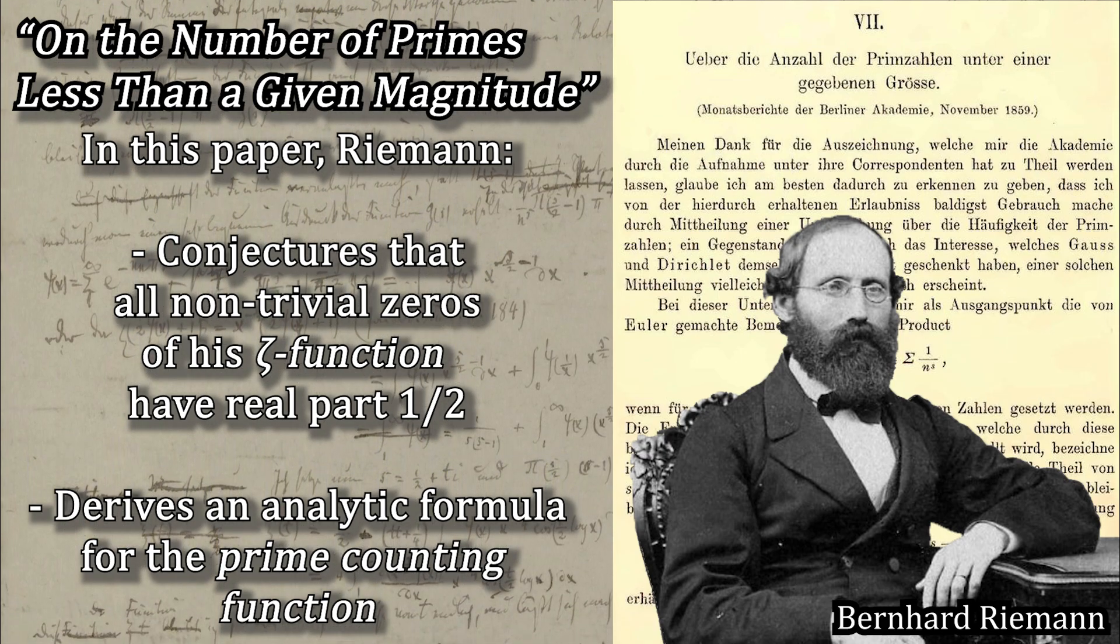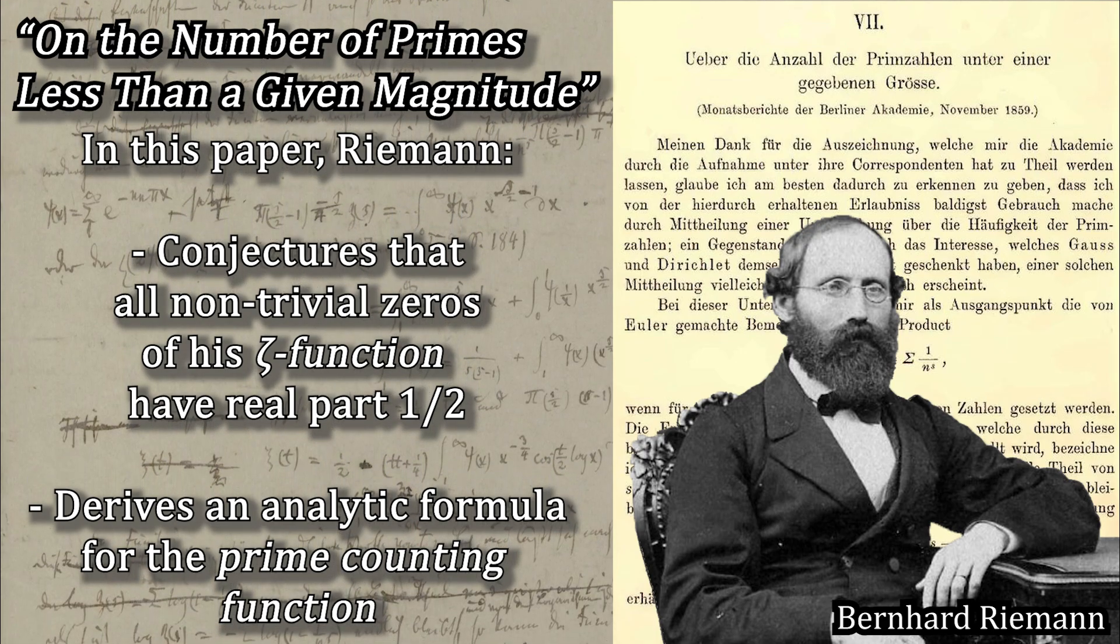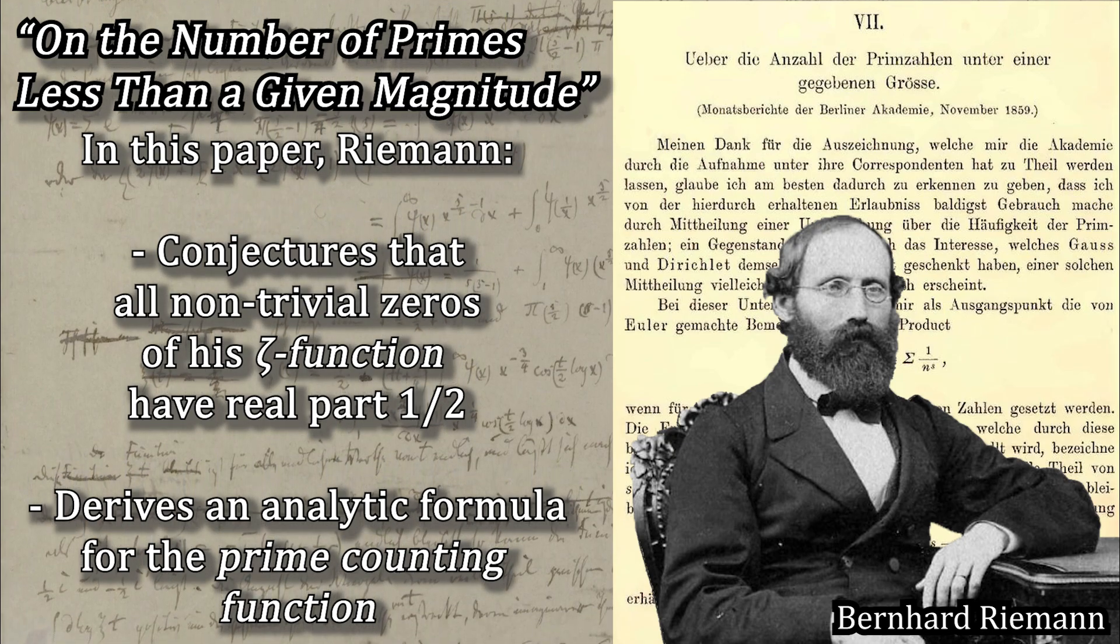Specifically, he conjectured that the non-trivial complex zeros of an analytic continuation of a special function called the Riemann zeta function all have real part one-half.